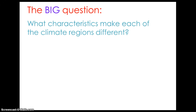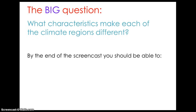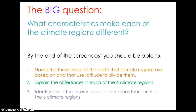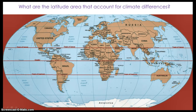The big question: what characteristics make each of the climate regions different? By the end of the screencast, you should be able to name the three areas of the earth that climate regions are based on and that use latitude to divide them, explain the differences in each of the six climate regions, and identify the differences in each of the zones found in five of the six climate regions.